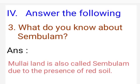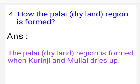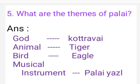Now we answer the remaining questions. Third: What do you know about Sembulam? Answer: Mullai land is also called Sembulam, due to the presence of red soil. Fourth: How is the Palai dry land region formed? Answer: The Palai dry land region is formed when Kurunji and Mullai dry up. Fifth: What are the themes of Palai? Answer — God: Kottravai; Animal: tiger; Bird: eagle; Musical instrument: Palai yaal.